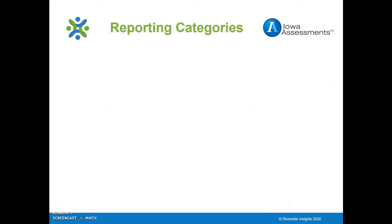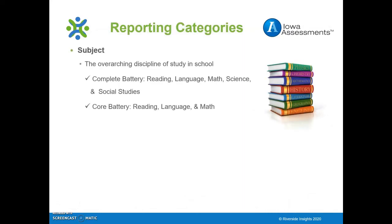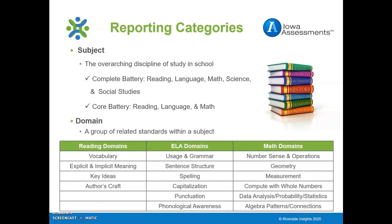The reports for the Iowa Assessments Complete and Core Batteries provide student data at three levels. First, scores are provided at the highest overall level — the subject area administered. Tested and reported subjects for Iowa Complete are reading, language, math, science, and social studies. Students taking the Iowa Assessments Core Battery are tested in reading, language, and math. A domain is a group of related standards in reading, language, math, science, or social studies. Iowa Complete and Core assessment domains include vocabulary, usage and grammar, numbers, sense and operations, and other domains.